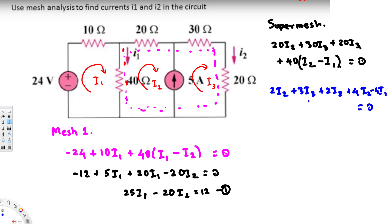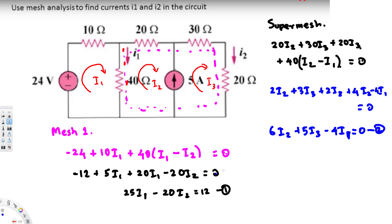Adding like terms: 2·i2 plus 4·i2 gives 6·i2, and 3·i3 plus 2·i3 gives 5·i3. So we have: 6·i2 + 5·i3 minus 4·i1 equals zero. This is our equation two. Notice we have three unknown variables, so we need one more equation to solve the problem.